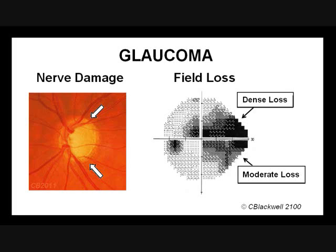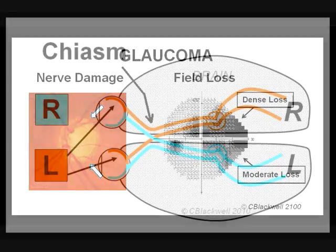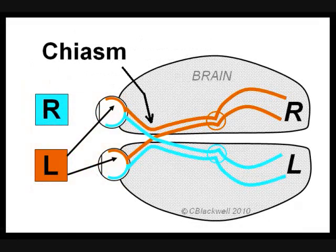After the nerve fibers exit the eye, they travel through the orbit and meet at the base of the brain in a structure called the chiasm. At this junction, half of the nerve fibers stay on one side, while the other half cross over to the other side. Following the colors in the diagram shows how nerve fibers divide into right and left halves of vision. Specifically, the right half of the brain serves the left half of vision and vice versa.